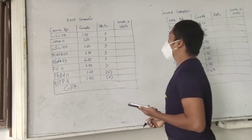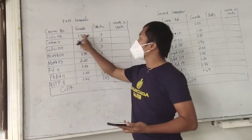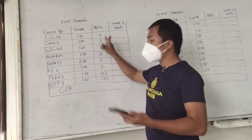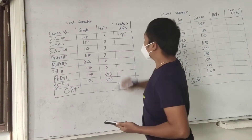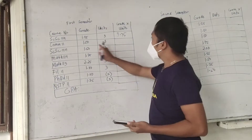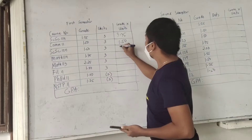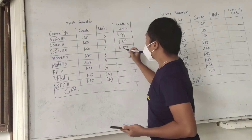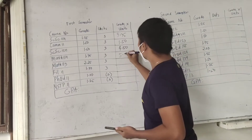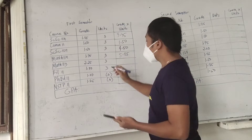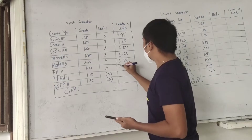First, you have to get the product of each subject. So 1.25 times 3 is 3.75. Then 1.5 times 3 is 4.5, and this one is also 4.5. Then 1.75 times 3 is 5.25, 2.25 times 3 is 6.75, and this one is 3.